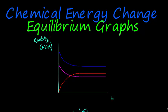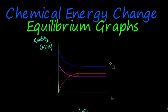Hi and welcome. We're still looking at chemical energy changes, specifically equilibrium graphs. We've already looked at equilibrium graphs in the previous video, and I'll repeat some of what I said there, but also look at the changes that can happen in a reaction and how it favors the forward or the reverse reaction.